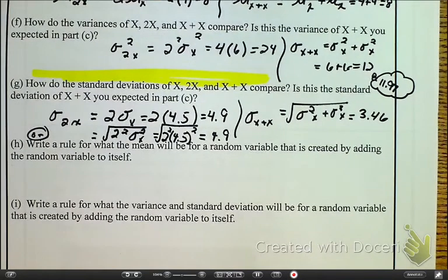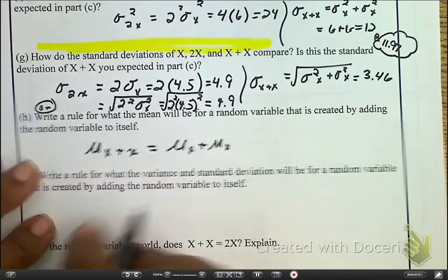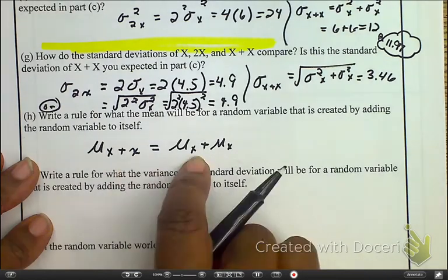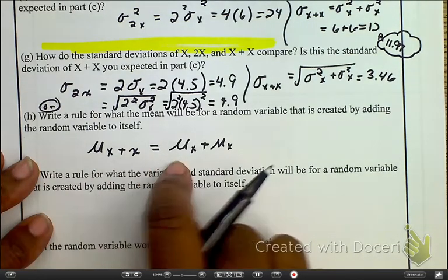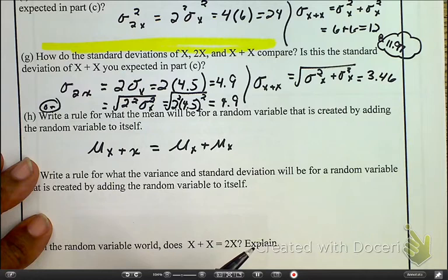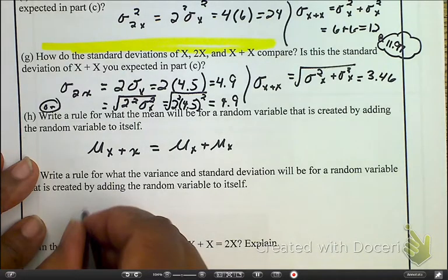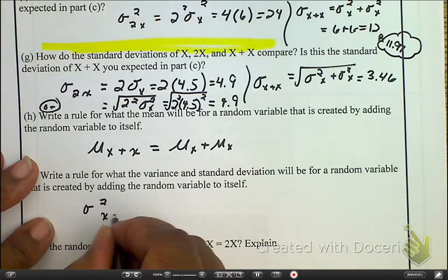So with that being said, here are the rules. For the mean, just like it was before, we just add them together, but for the variance and standard deviation.